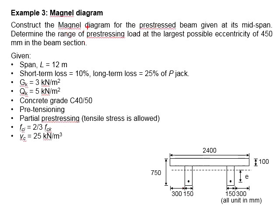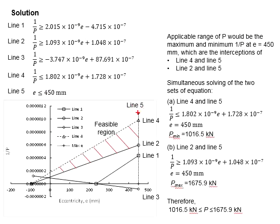The question asks us to determine the applicable range of prestressing load when the eccentricity is equal to 450. It happens to be on the line of this 450. The applicable range of P will be in between these two.